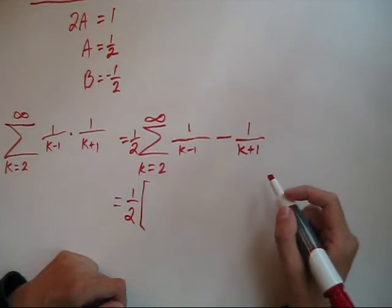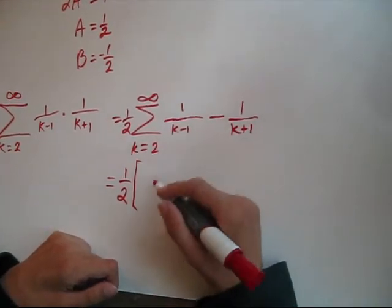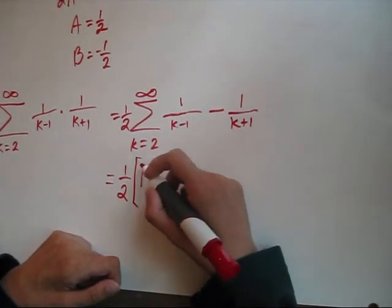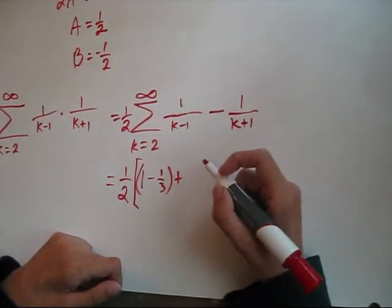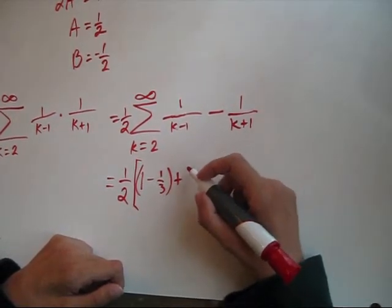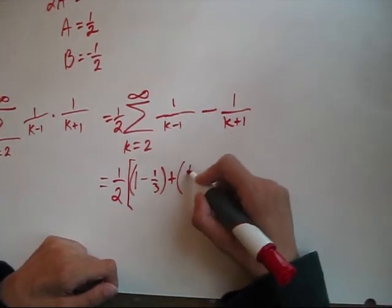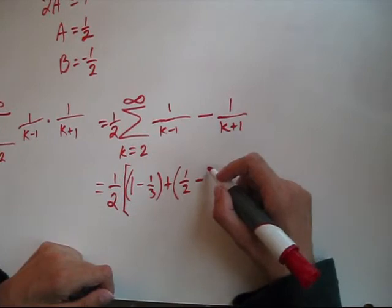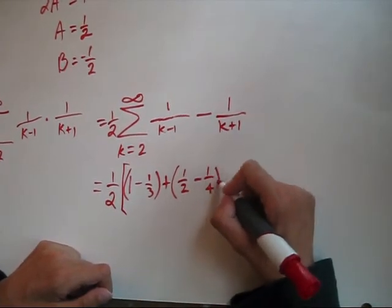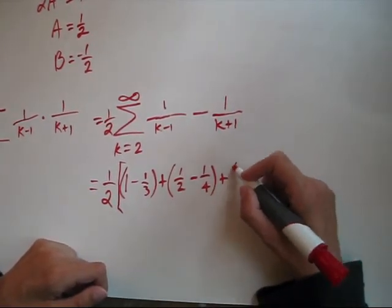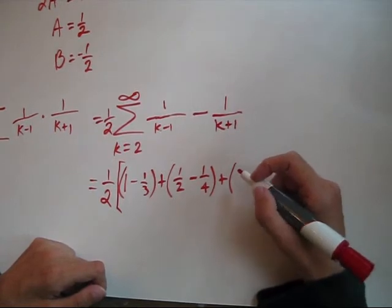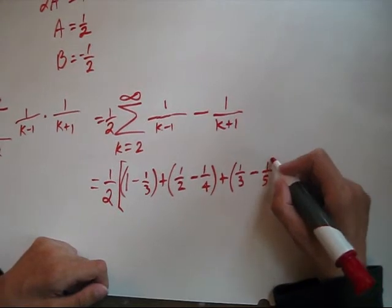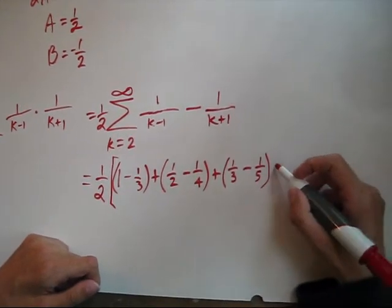So let's write out the first few terms. Let's plug in 2. We're going to get 1 minus 1 third. Okay, let's plug in k equals 3. We're going to get 1 half minus 1 fourth. Let's plug in k equals 4, and we'll write out a few more.